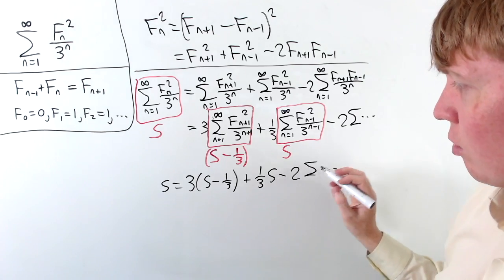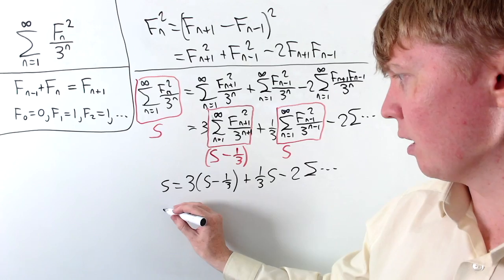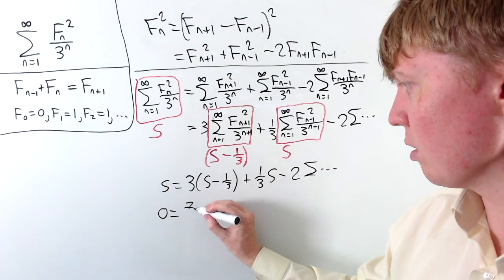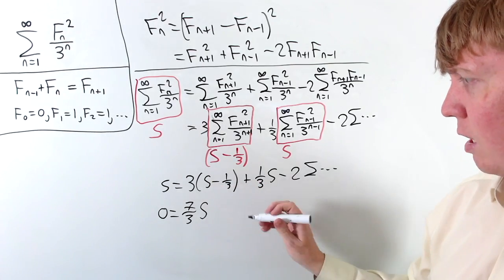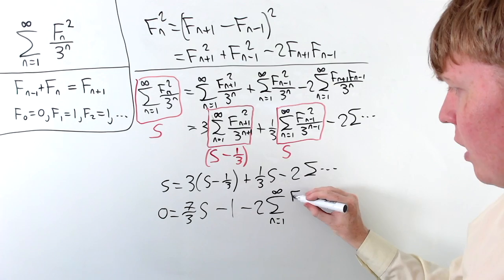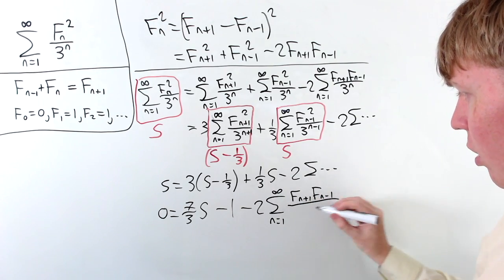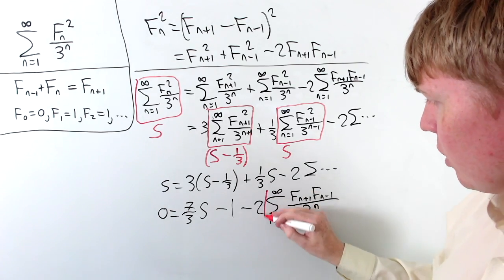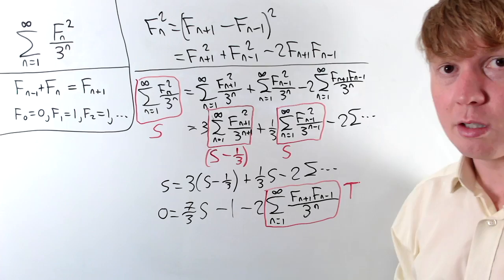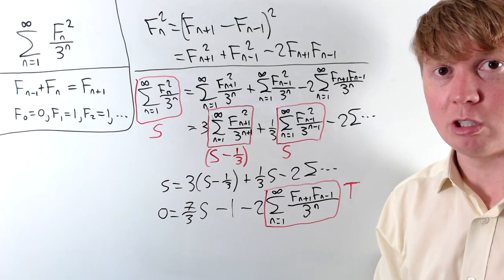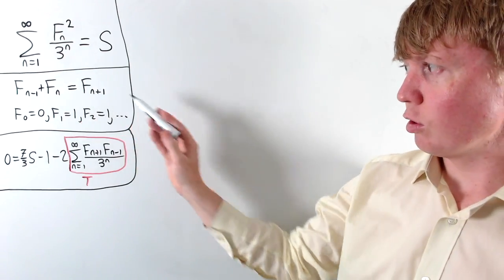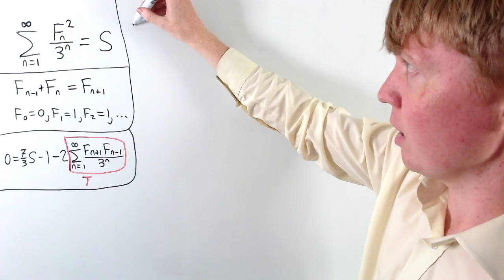Rearranging, S equals 3 times (S minus one third) plus one third times S, minus 2 times our remaining contribution. Collecting all S terms: 0 equals 7 over 3 times S, minus 1, minus 2 times this remaining sum from n=1 to infinity of fn+1 times fn-1 divided by 3 to the n. We label this new series capital T. Our goal is to express T in terms of S and solve for S.